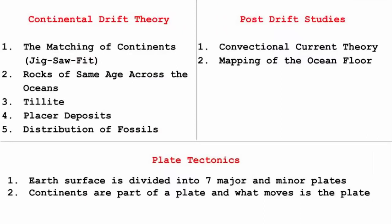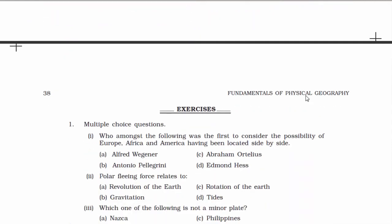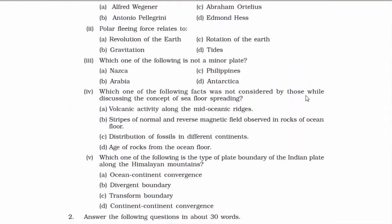In this chapter, we discussed three important theories that explain the distribution of oceans and continents: Continental Drift Theory by Alfred Wegener, the concept of sea floor spreading as post-drift theory proposed by Harry Hess, and finally the concept of plate tectonics by Mackenzie, Parker, and Morgan, which is now the well-accepted theory. Question and answer can be found on the website; the link is in the description.